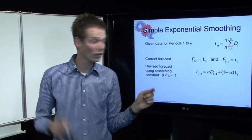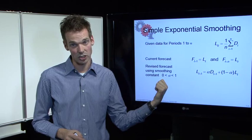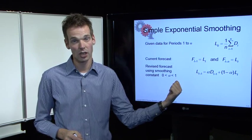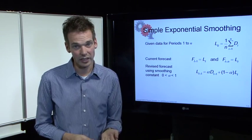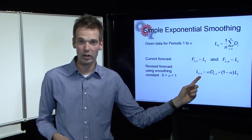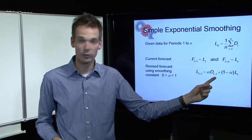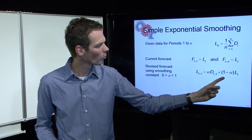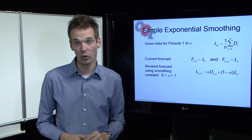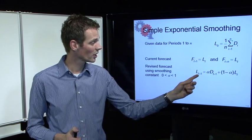The smoothing constant is called alpha, and alpha always has to be between 0 and 1 (0 ≤ alpha ≤ 1). The formula for updating the level is: L4 equals alpha times demand 4, plus 1 minus alpha times the level for the previous period, L3.